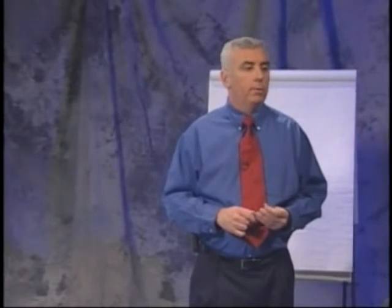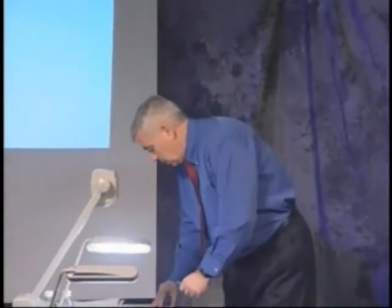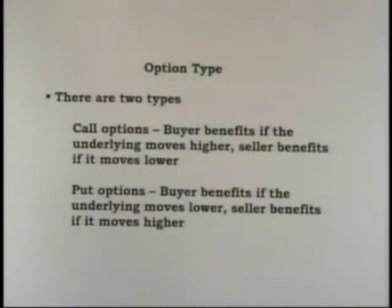The expiration date is when the option contract becomes void, and expiration is normally the third Friday of every month. If you're short an option going into expiration and it's in the money, then you will be assigned automatically. There are two types of options: call options and put options. If you buy a call option, you benefit if the price of the stock moves higher. If you buy a put option, you benefit if the price of the stock moves lower.